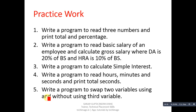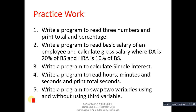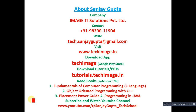Based on this program, here are some practice exercises: read three numbers and print total and percentage; read basic salary and calculate gross salary where DA is 20% and HRA is 10% of basic salary; calculate simple interest; read hours, minutes, and seconds and find total seconds; swap two variables with and without a third variable. You may have implemented these in C — just convert the logic using Java syntax. Implementing these will help you understand Java's syntax and how to compile and execute Java code. Thank you for watching.